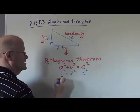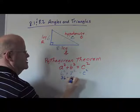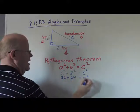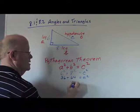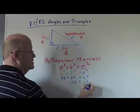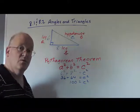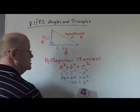6 squared is 36. And 8 squared is 64. And the sum of those two squares is equal to 100. So 100 is equal to C squared. And if we square root each side of the equation, we find out that C is 10 units long.